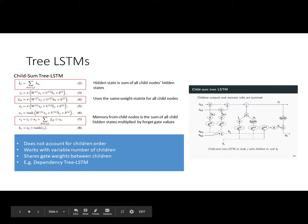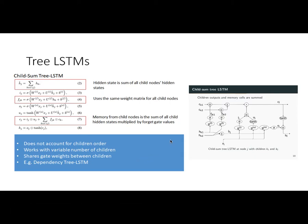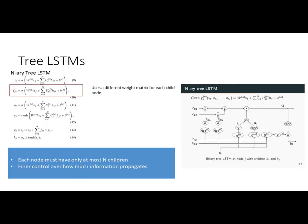For the forget gate in the child-sum Tree LSTM, you use the same weight matrix to multiply against the child nodes' hidden states. Essentially, you take the hidden states from the child nodes, put them through the same function, and use that to compute your new memory. For computing I, U, and O, you sum up the two hidden states together. Because you're summing all child nodes, this doesn't account for the order of children, but you can work with a variable number of children.